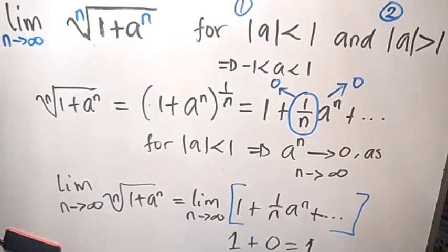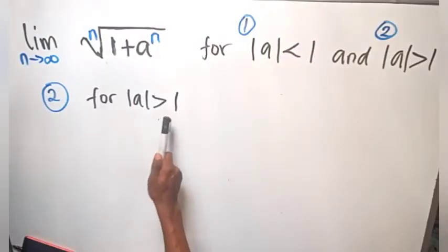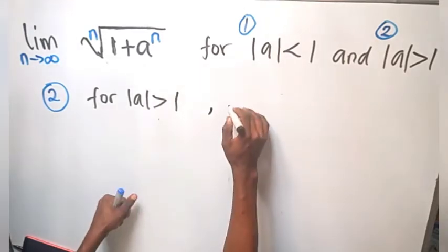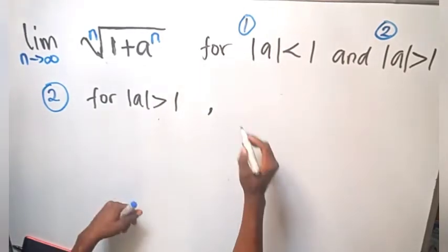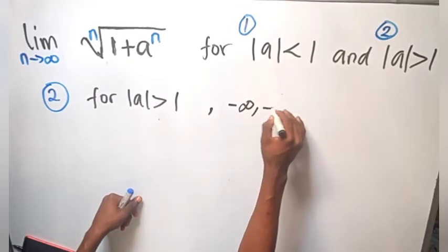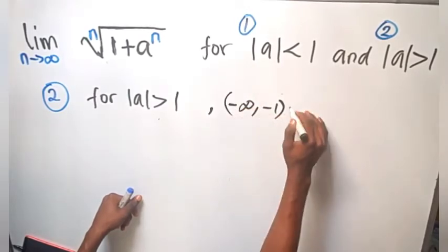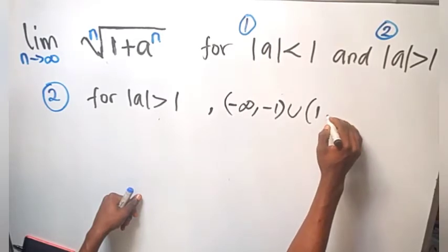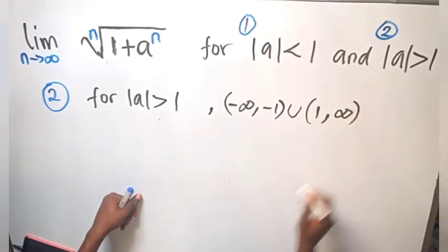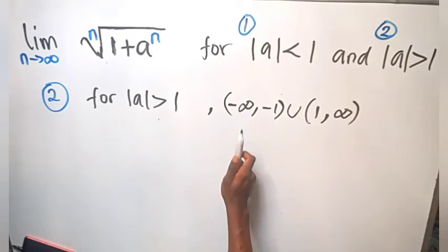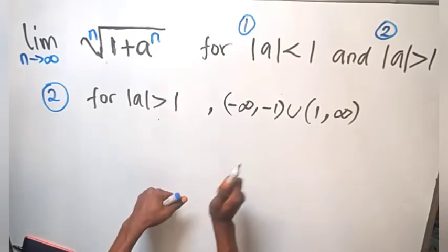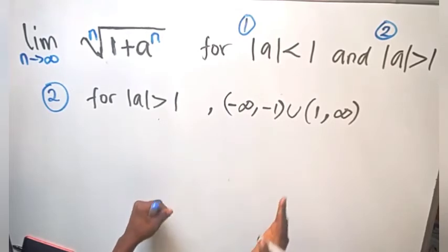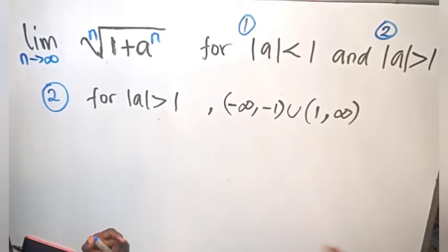Now let's look at Case 2. For the absolute value of a to be greater than 1, it means that a is taking values from negative infinity to negative 1, and also from 1 to positive infinity. That is to say, a is a set of values that does not lie in the interval between negative 1 and 1. We can have a equal to 2, negative 5, negative 10, and so on.